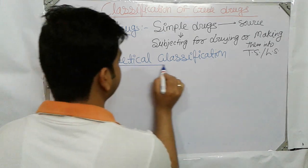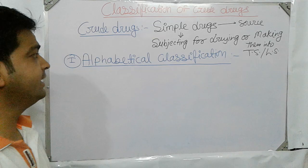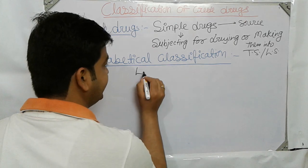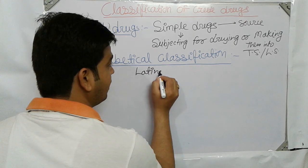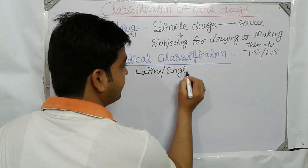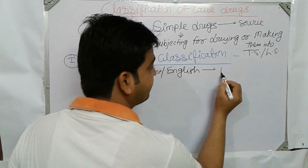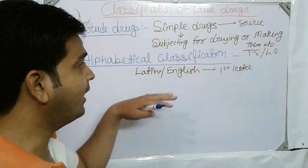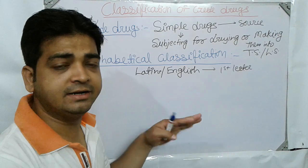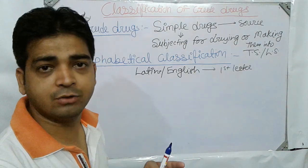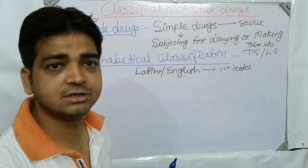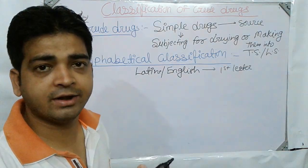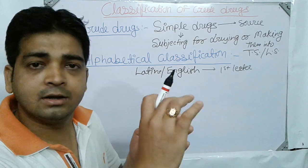In alphabetical classification, we take the first letter of each crude drug's Latin name or English name, and we arrange the crude drugs according to that alphabetical order — just like in a dictionary, manual, or index where we search for a particular word by its first letter.